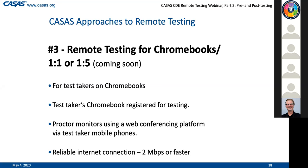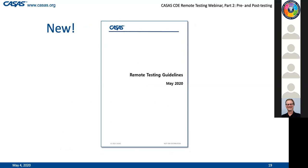There are also instructions in the directions that if a proctor sees a reason to be concerned, the proctor can interrupt the test at any time to see if there is a real concern, in which case they would stop the test. You're able to start the test up again if appropriate, or end the test and end the session. This is a mock-up version of these guidelines - they are quite detailed, about 20 pages with examples and scripts.